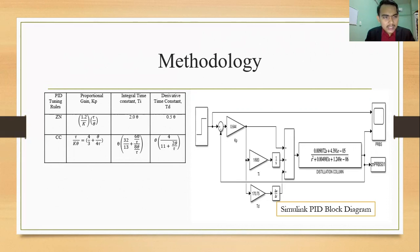There is the transfer function that we obtain by using system identification. When the system identification we use, we need to find the best fit of the transfer function. Then with that best transfer function, we put inside this distillation column so that we can run the Simulink PID to obtain the best graph or output.